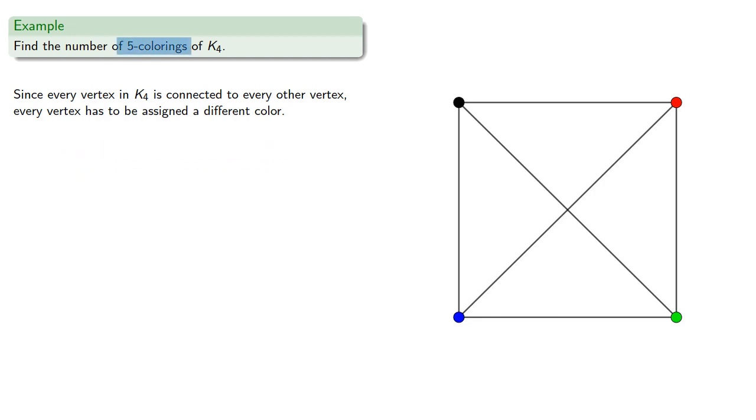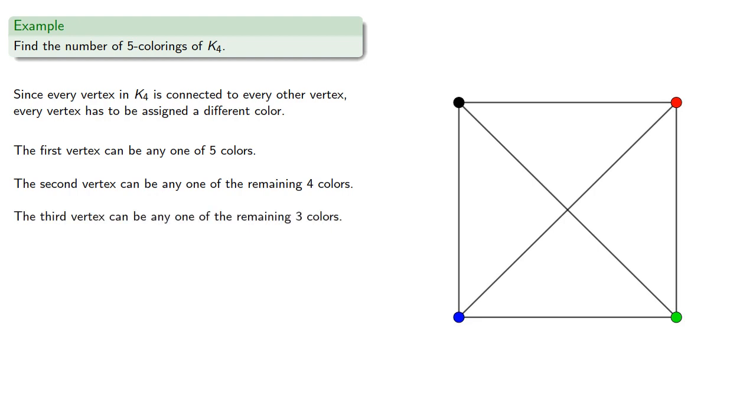Now remember we're looking at a five coloring, and so the first vertex can be any one of the five colors. The second vertex can be any one of the remaining four colors, the third vertex can be any one of the remaining three colors, and the last vertex can be any one of the remaining two colors. So the number of colorings is...